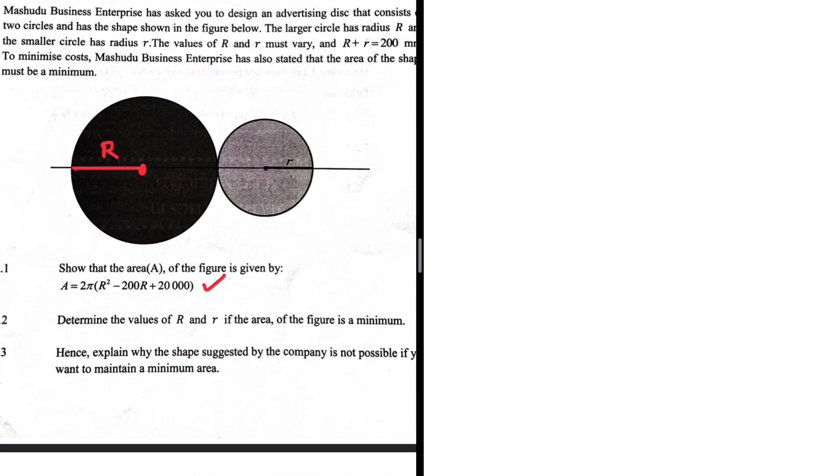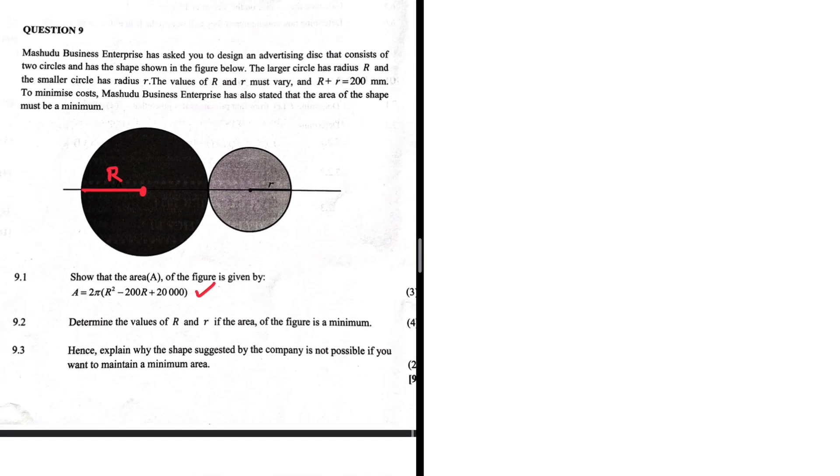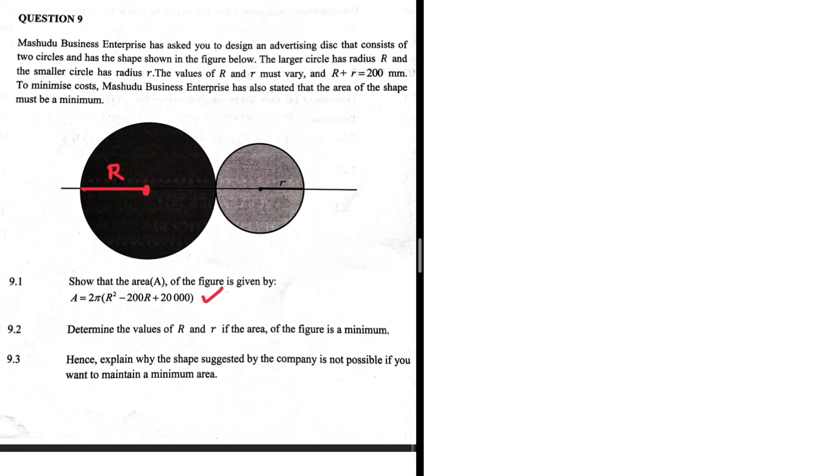Show that the area of the figure is given by A equals 2π multiplied by R squared minus 200R plus 20,000. This is the kind of equation we expect in optimization. Question 9.